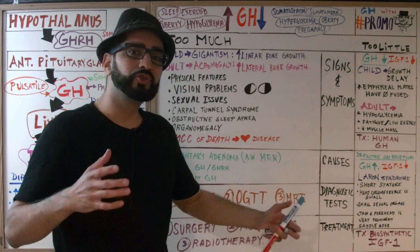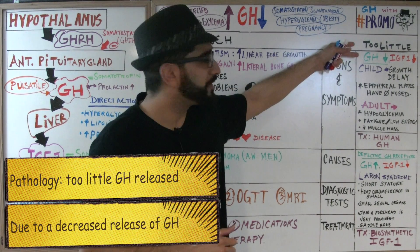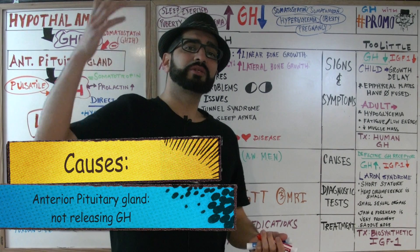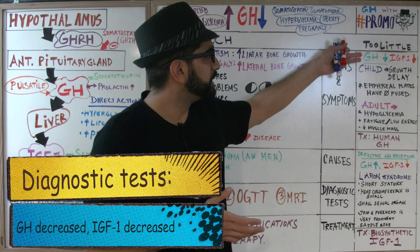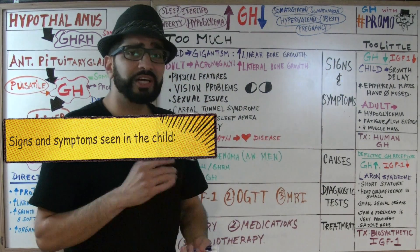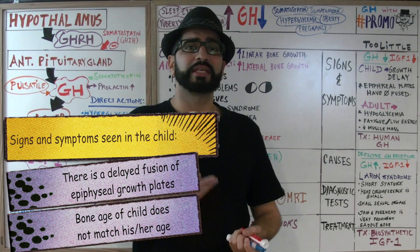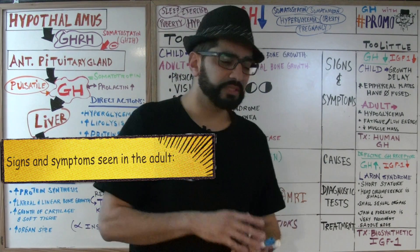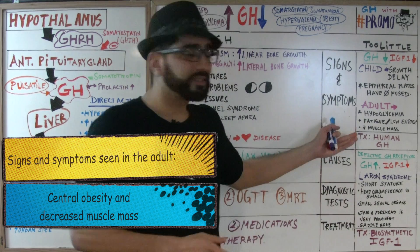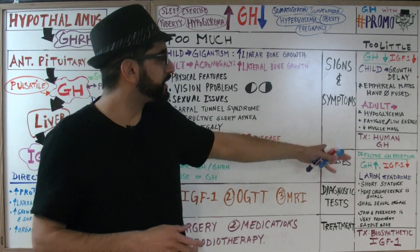Now let's discuss too little growth hormone. This can result from insufficient GHRH from the hypothalamus or insufficient GH from the anterior pituitary. In a child, decreased GH and IGF-1 causes growth delay — the epiphyseal plates fuse late, so bone age doesn't match chronological age. In an adult, symptoms are more vague: hypoglycemia, weakness, fatigue, decreased sexual energy, central obesity, and decreased muscle mass. Treatment for both is human growth hormone.